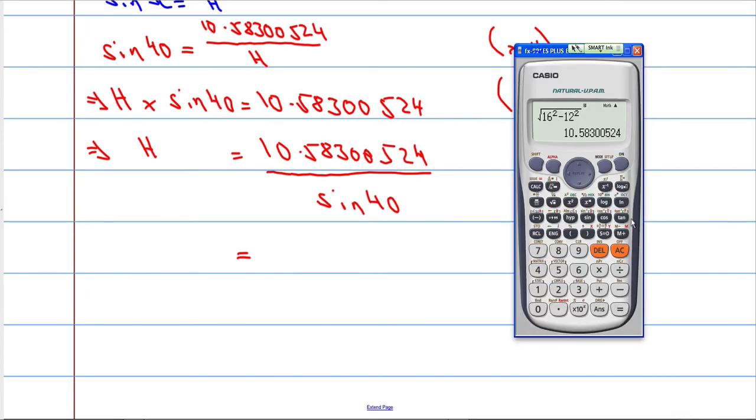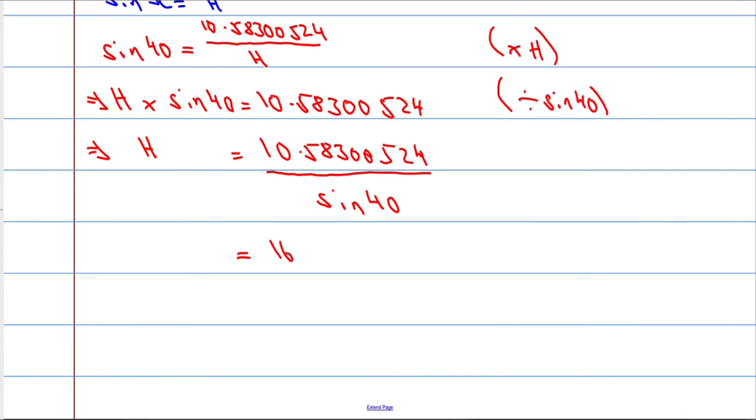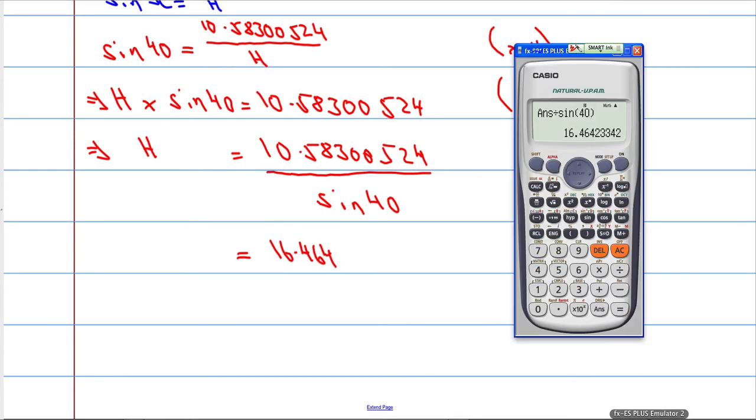H will equal 10.58300524 divided by sin of 40, which equals, let the calculator do the hard work here. 10.58300524, divide that by sin of 40, and that gives us 16.46423342.